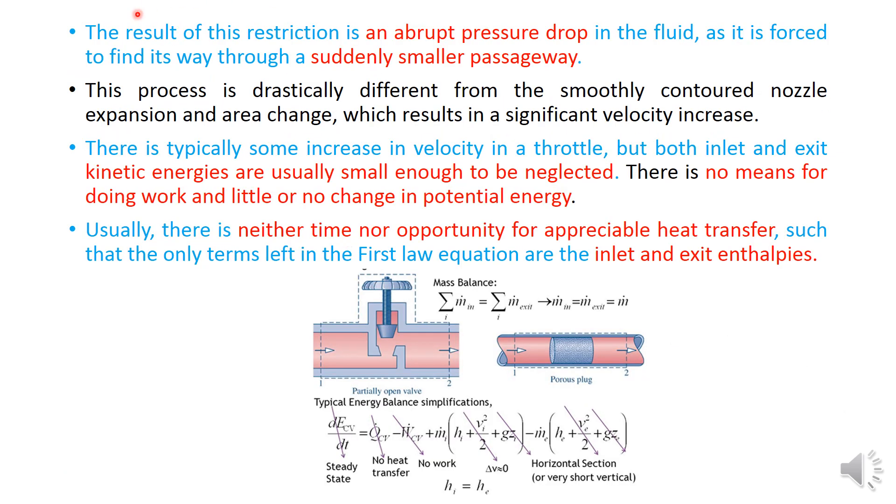Now here are the characteristics of the throttling process. The result of this restriction is an abrupt pressure drop in the fluid as it is forced to find its way through the suddenly smaller passages. As you can see here, as the fluid enters over here, suddenly the passage is reduced and it is forced to find its way through a smaller passageway.